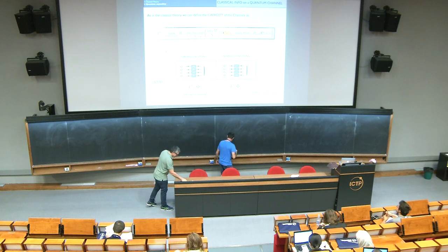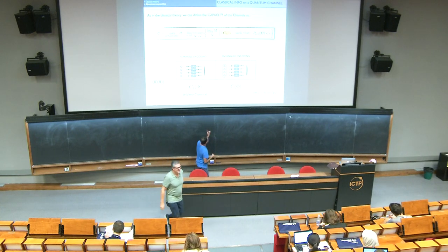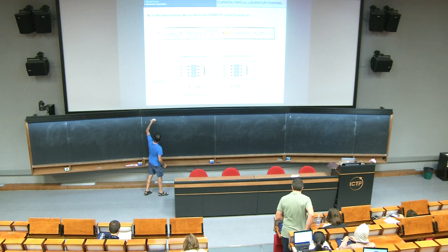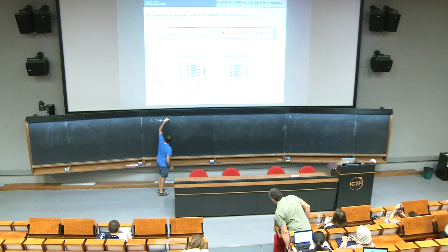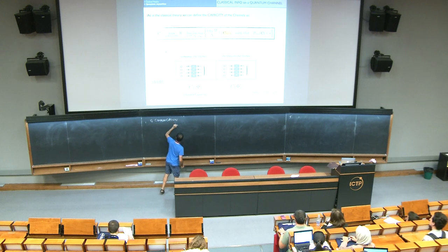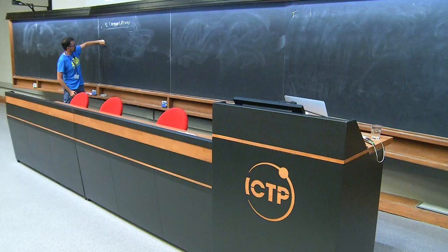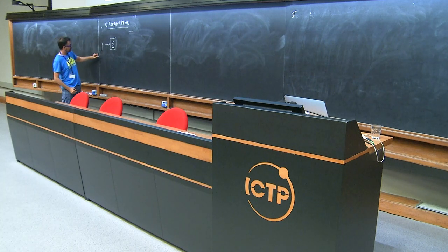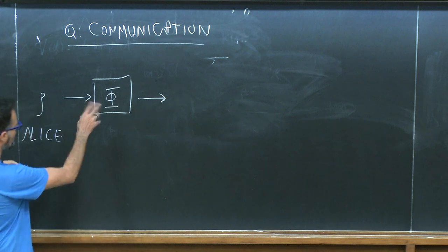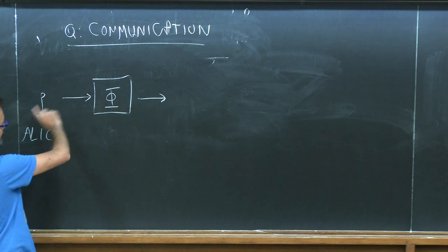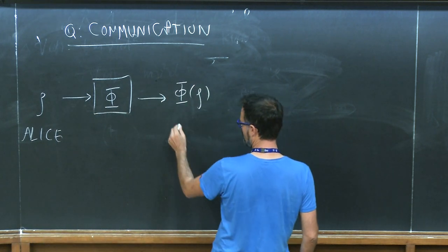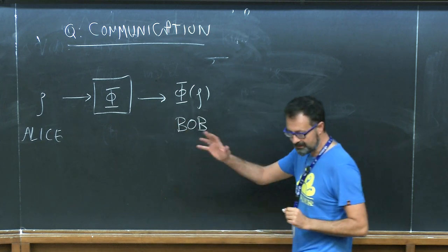Let's start from where we finished yesterday. We are discussing quantum communication. The basic idea is to represent the communication channel as a mapping phi that takes the input state prepared by Alice, transforms it according to the action of the noise on the information carrier, and maps it into a new density matrix phi of rho, which arrives to Bob.